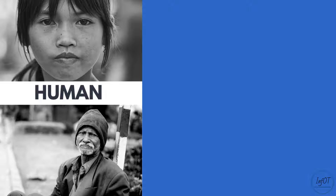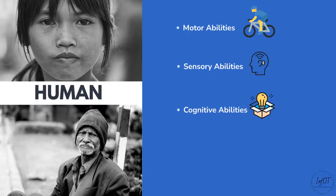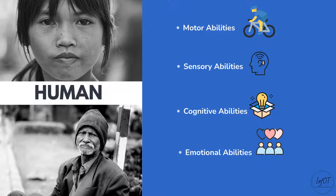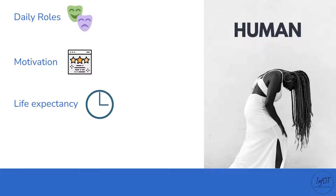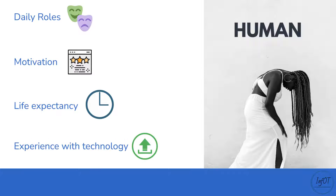Let's look at the human domain. According to the model, the abilities of a person are divided into motor, sensory, cognitive, and emotional abilities. We need to assess these skills in order to propose a proper Assistive Technology to our client and to develop appropriate educational programs. We also need to take into consideration the daily roles that our clients have, their motivation, their expected life duration, and their experience with technology.